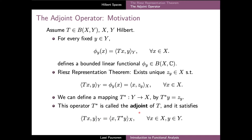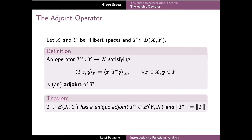This operator, which is called the adjoint of T, is indeed a well-defined operator from the whole of Y into X. If we substitute the definition of T* at Y into our previous equation, we can see that the adjoint satisfies a nice identity with the inner product on X and Y. As a more precise definition, for a bounded operator T we define an adjoint of T to be an operator satisfying the inner product identity shown here.